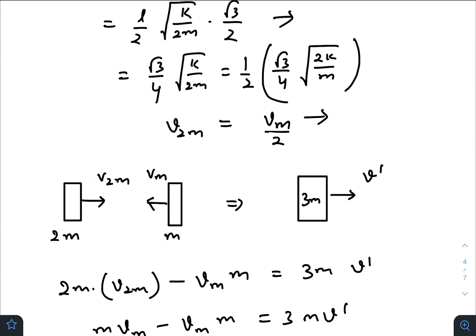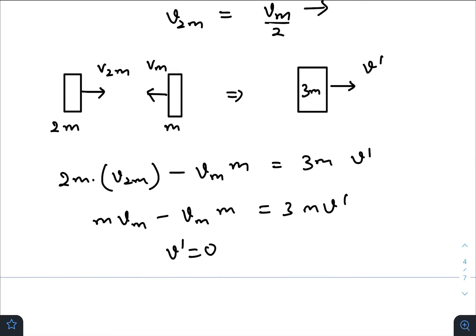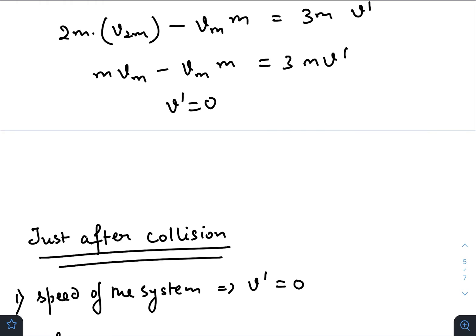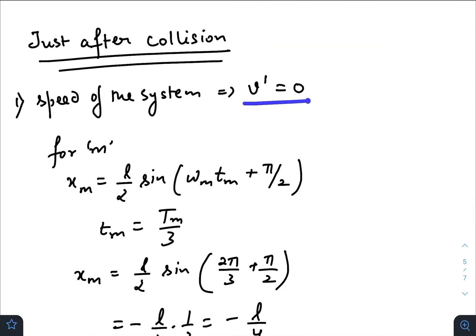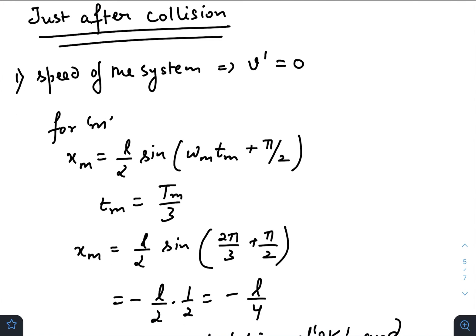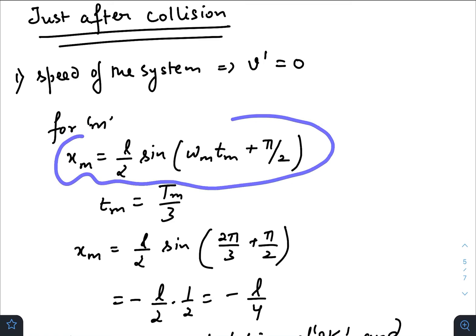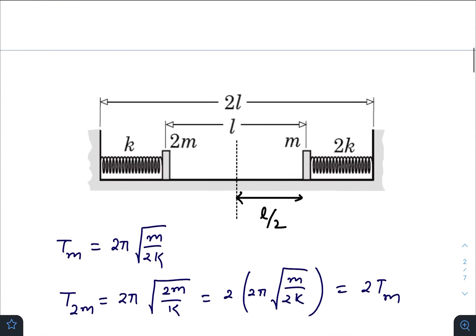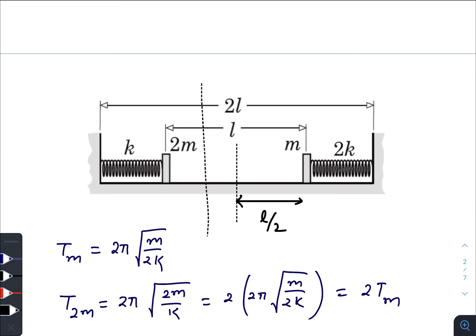Just after the collision, let the velocity of the combined mass be v′. Applying conservation of momentum, we get v′ = 0. So just after collision, the velocity of the combined mass is zero. Checking the collision location: substituting the value for mass m, x_m = −l/4, meaning the collision takes place at a distance l/4 from the mean position.